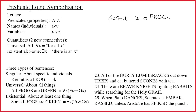This video will introduce the basic techniques of symbolization in the system of predicate logic. Most people come to predicate logic having first worked in propositional or sentential logic — those are two names for the same system. In propositional logic, simple sentences like 'Kermit is a frog' are symbolized by a single capital letter, say F in this case, since we've capitalized frog.